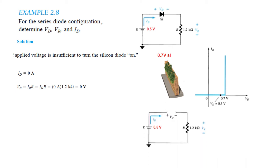Since IR is 0, VR equals 0. Using the KVL equation: minus E plus VD plus VR equals 0. E is 0.5V, VR is 0, therefore VD equals 0.5V. The supply voltage appears entirely across the diode.